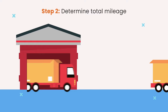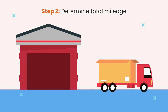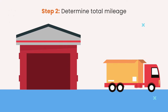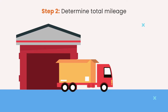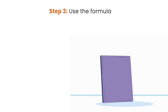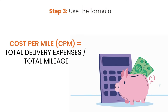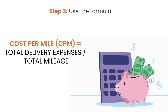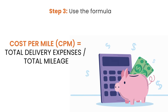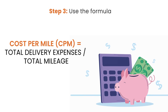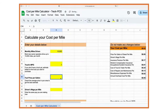Step 2: Determine total mileage by taking the vehicle's mileage at the beginning of the month and then again at the end. Step 3: Finally, use the following formula — cost per mile equals total delivery expenses divided by total mileage.